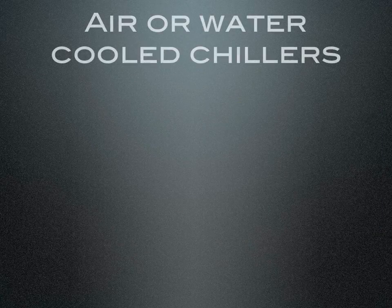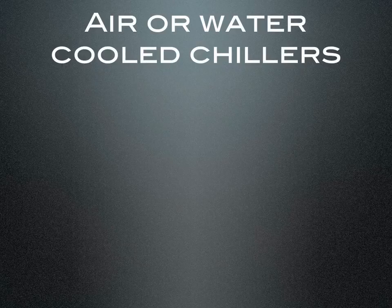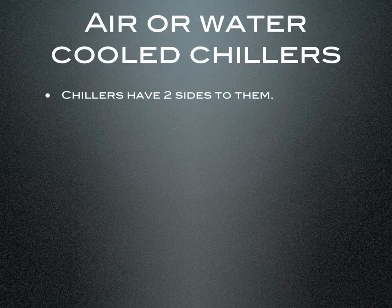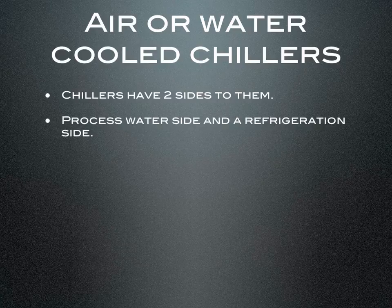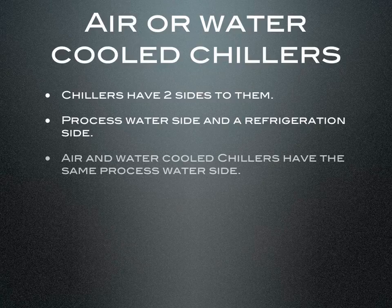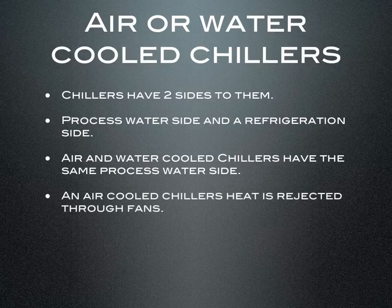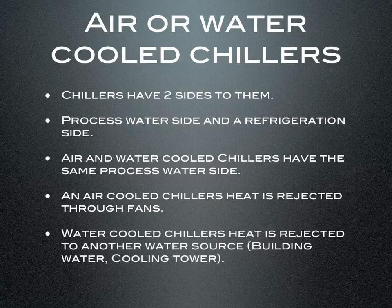Air or water cooled chillers — let's go over some of the comparisons and differences between the two. Chillers have two sides: a process water side and a refrigeration side. Air and water cooled chillers have the same process water side. An air cooled chiller's heat is rejected through fans, while a water cooled chiller's heat is rejected to another water source such as building water or a cooling tower. There's really not much of a difference — it's basically just how the heat is rejected.